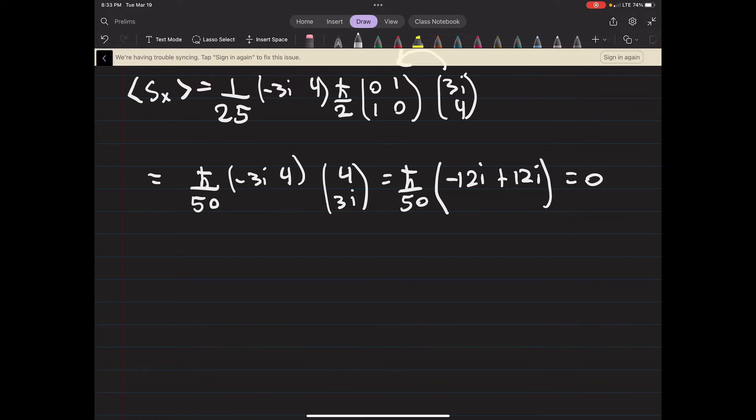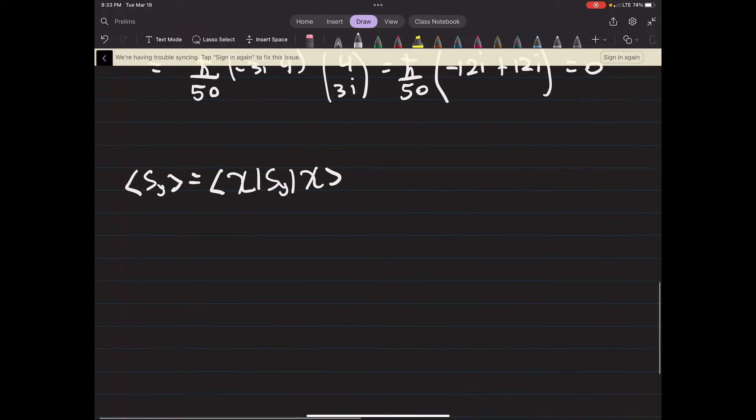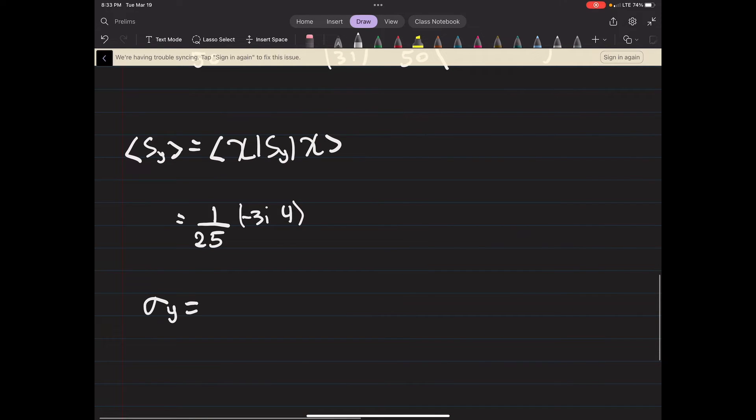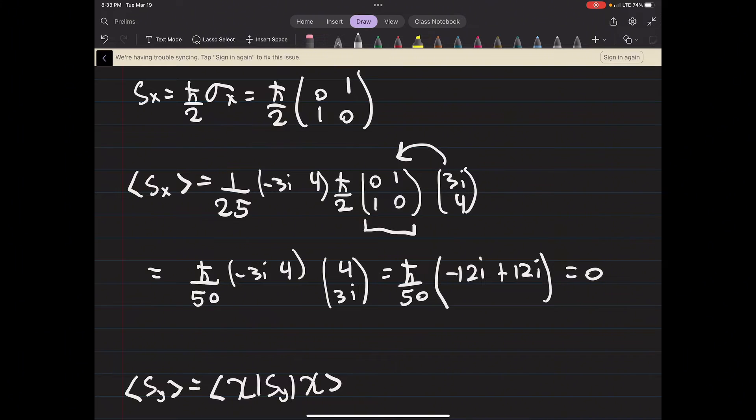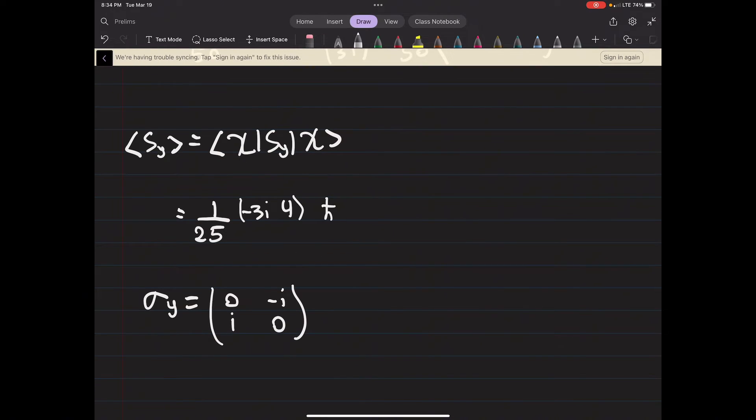What about the other ones? Well it's essentially going to follow the exact same procedure, so nothing too crazy. As always, the A is not going to be affected by any of this so we can always factor that out. And then (-3i, 4). It's worth noting, so Sy the Pauli spin matrix is (0,-i; i,0). So essentially all we're going to do is plug that into here.